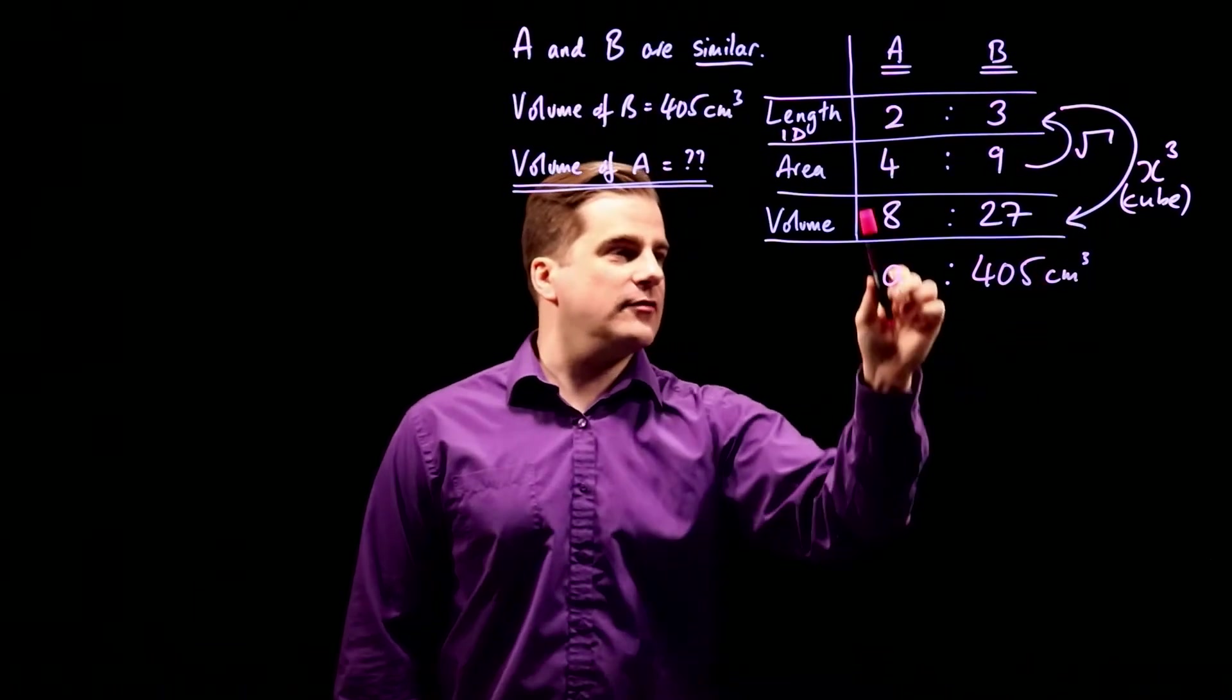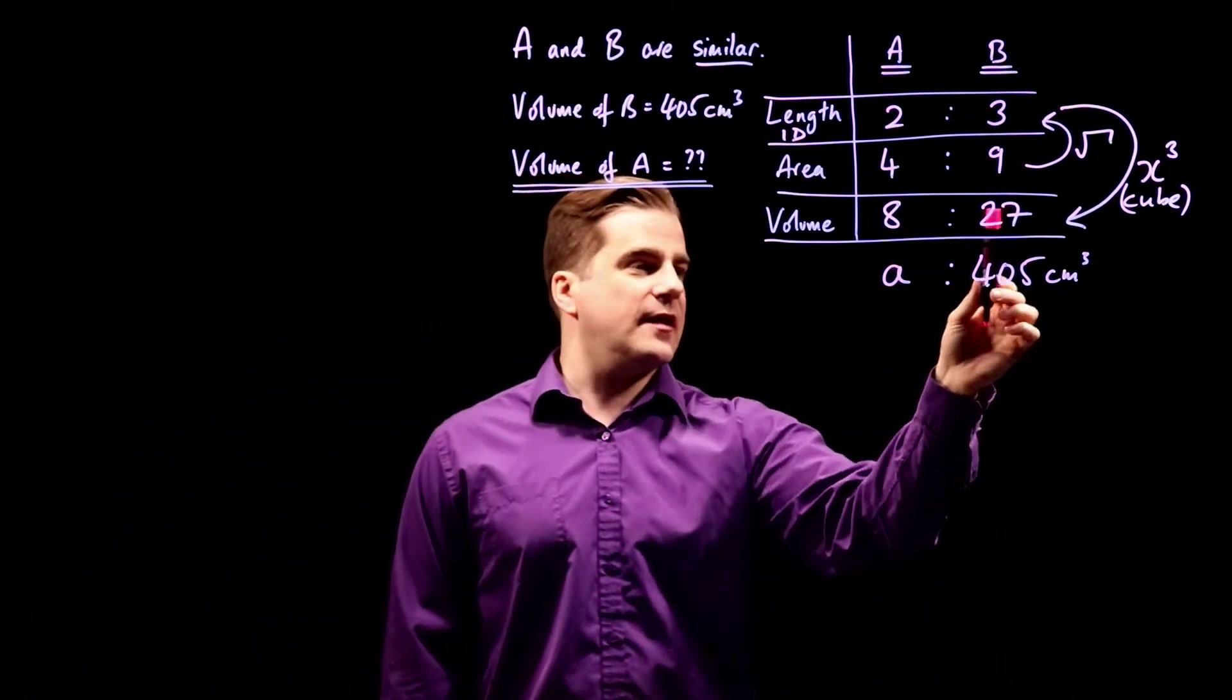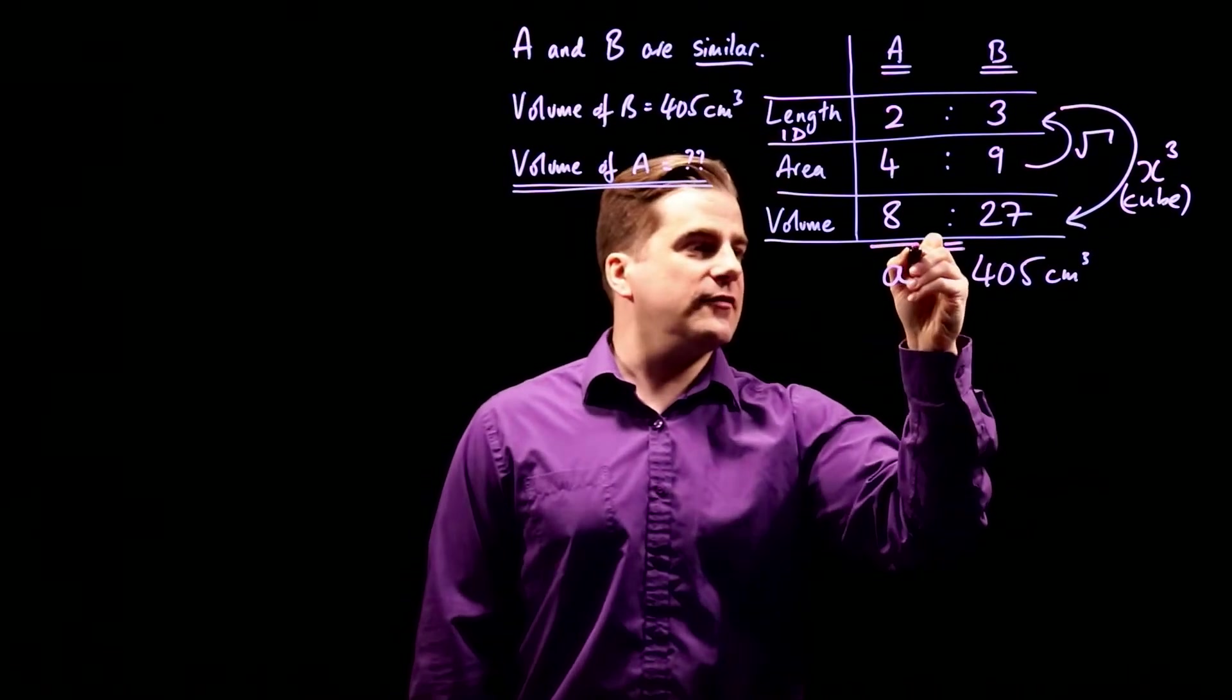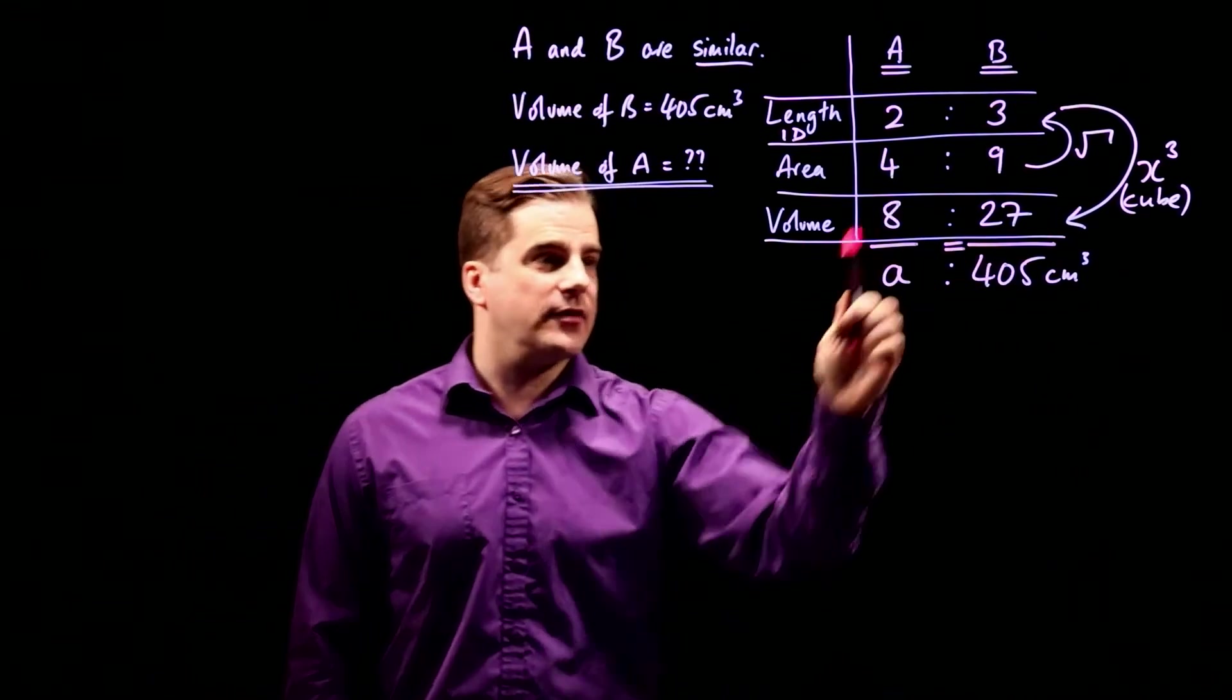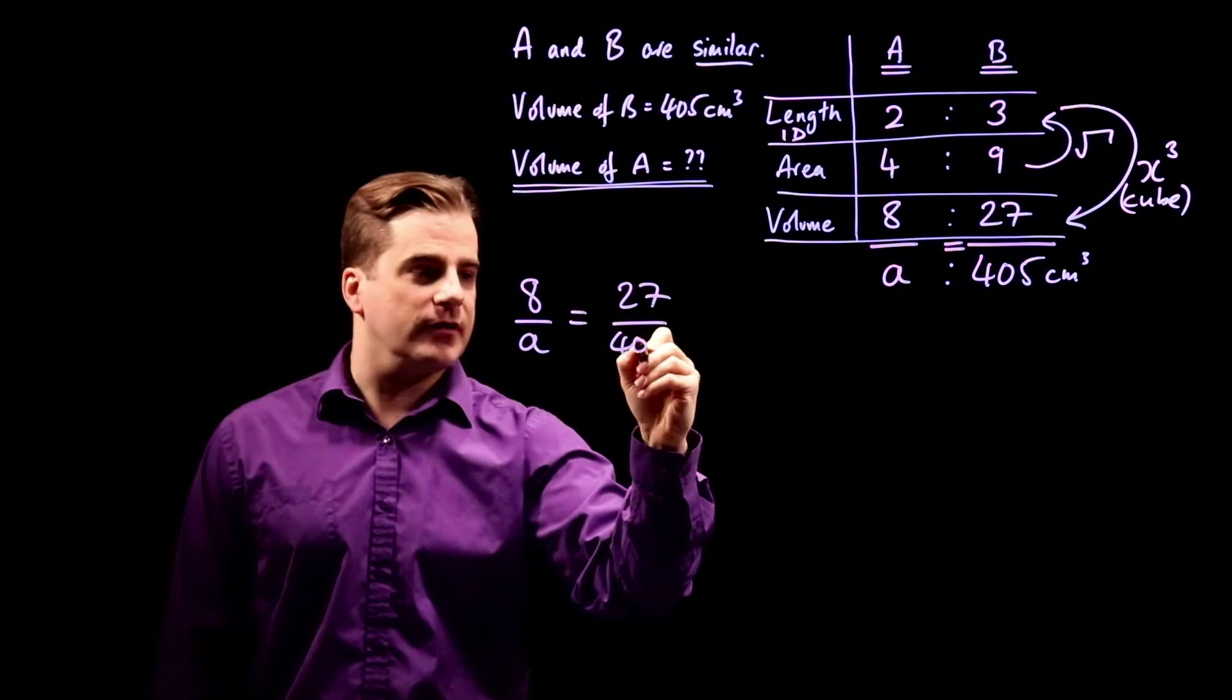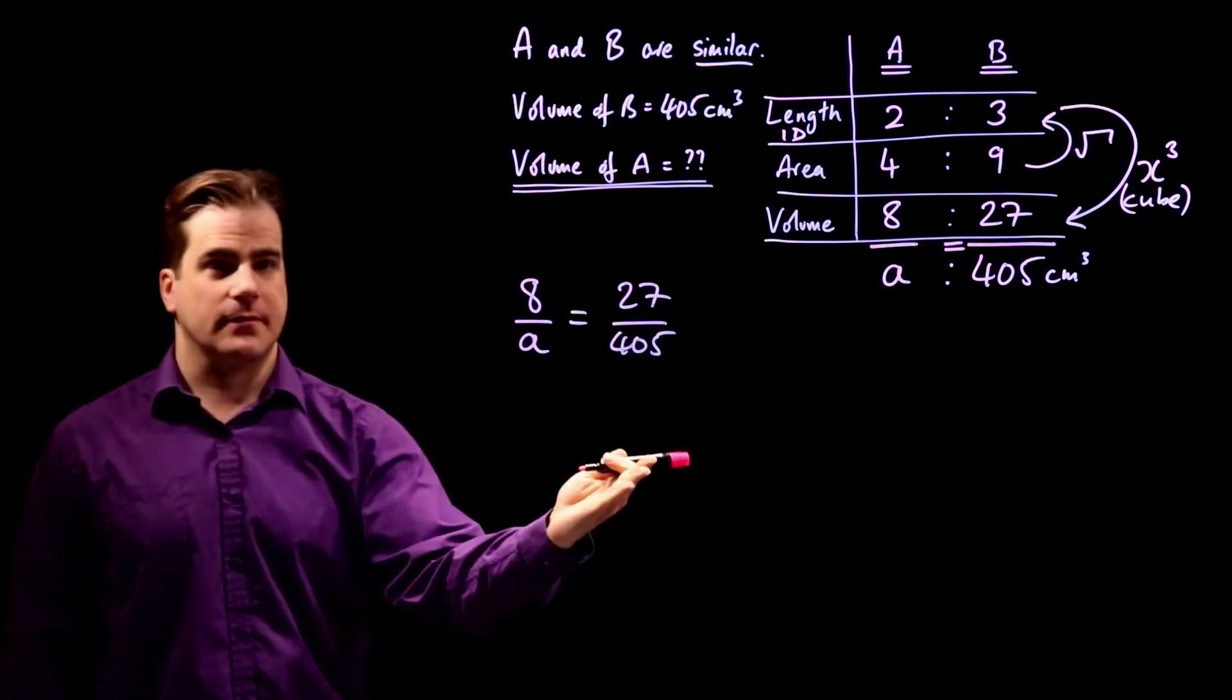Right. So now we're going to use our skills of converting ratios into equations. And you do it like this. It's 8 to 27 is what we want to 405. What you do, you just put an equal sign in there. Put a dividing line there and a dividing line there. And straight away, we have an equation. What we've got is 8 over A is equal to 27 over 405. So that's how you go from ratios to an equation. Equal sign, line, line, and you've got it.